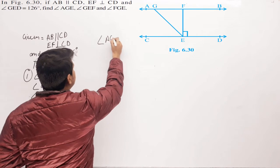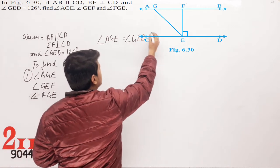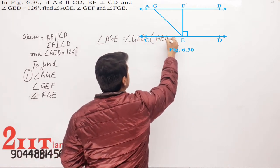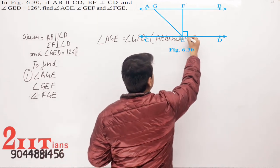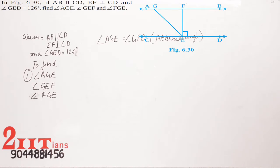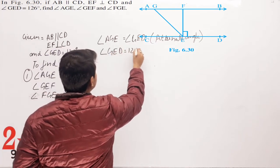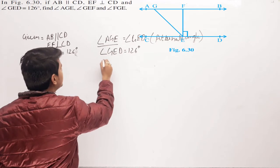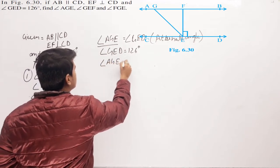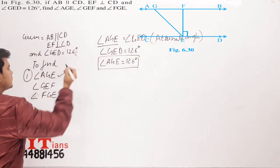Angle AGE is equal to angle GED, because these are alternate angles. In the figure you can see both angles — they are alternate interior angles. Angle GED is 126 degrees, so angle AGE is also 126 degrees.